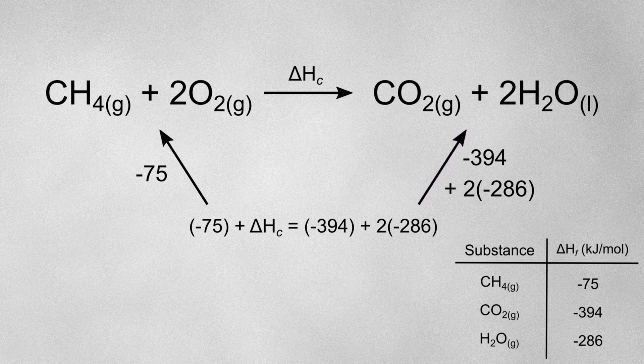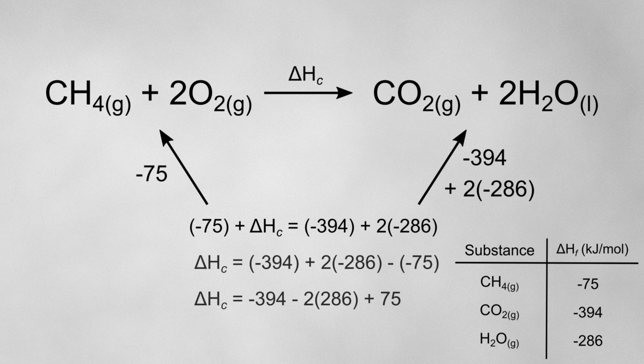Now with a bit of rearranging, the enthalpy change of combustion for methane comes out to minus 891 kJ per mole. So when you look for two routes which both follow the arrows, Hess cycles are much easier to solve.